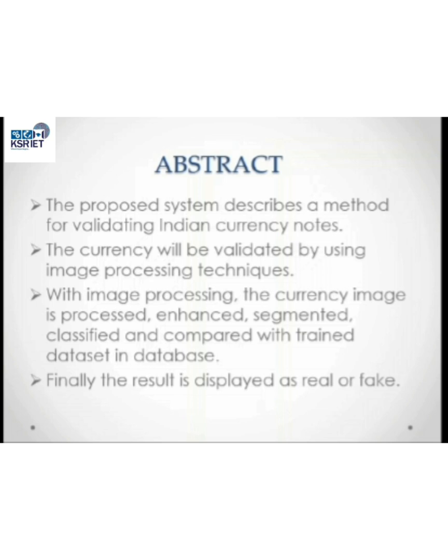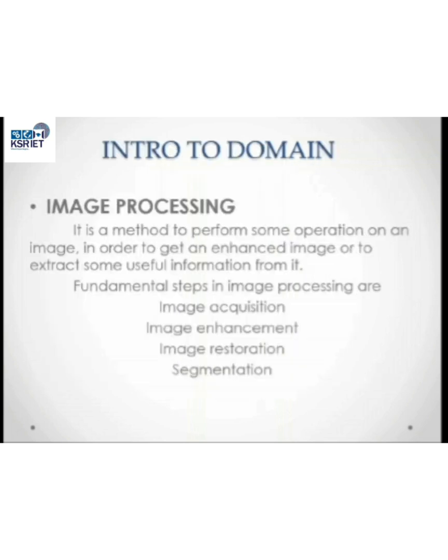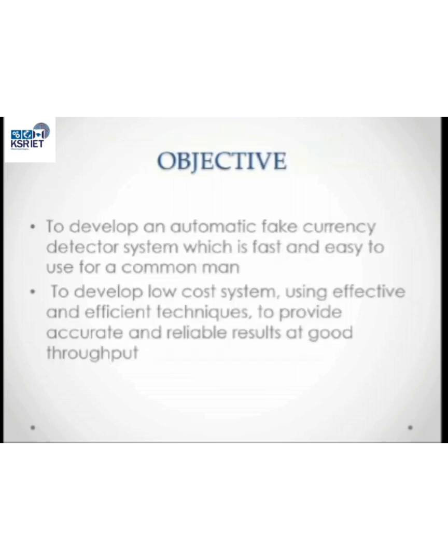The result is displayed whether it is real or fake. Introduction to Domain: Image processing performs some operation on an image in order to get an enhanced image or extract some useful information from it. Objective: It is fast and easy to use for a common man, using effective and efficient technique to provide accurate and reliable results at good throughput.